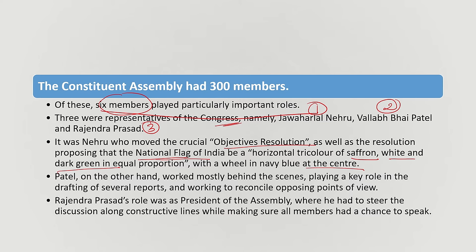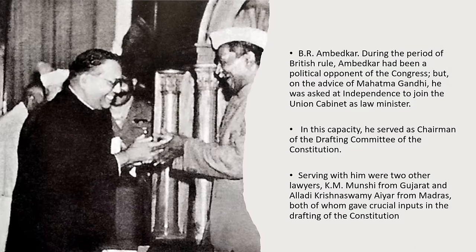Rajendra Prasad was the President of the Constituent Assembly. At that time, every person got the right to speak. These matters were brought to the President's attention. The fourth key person was B.R. Ambedkar.